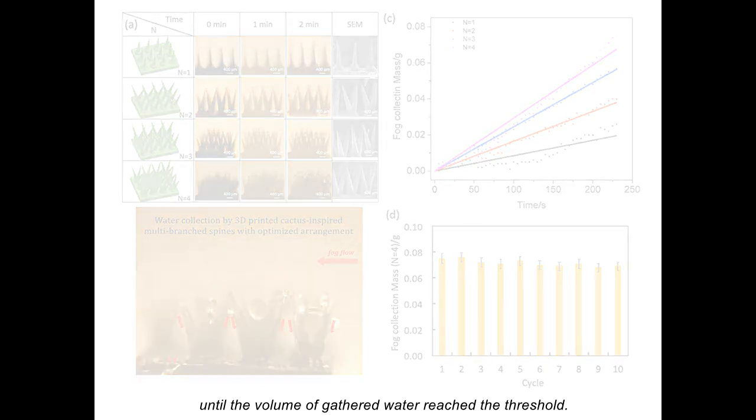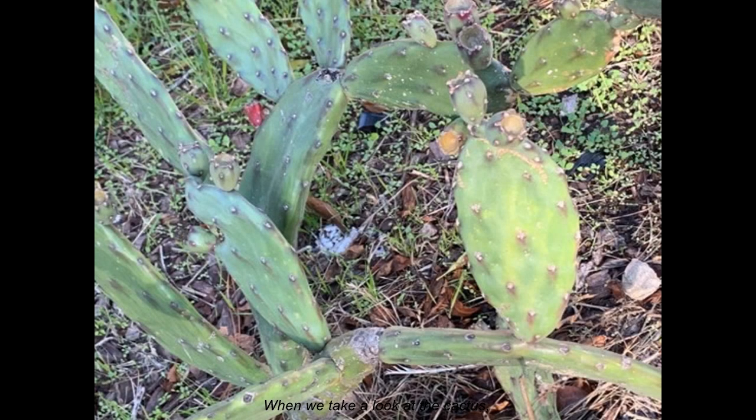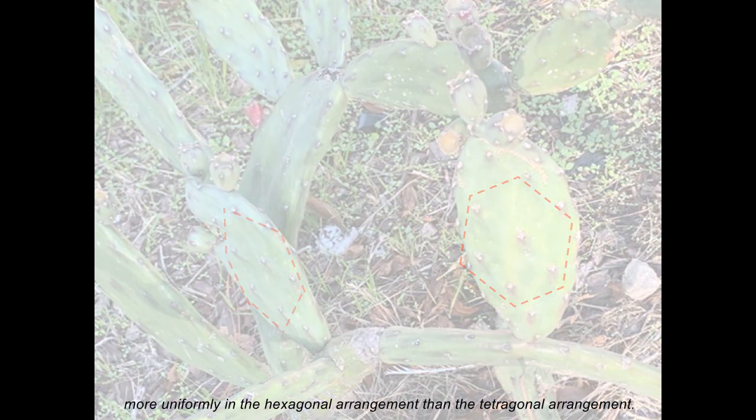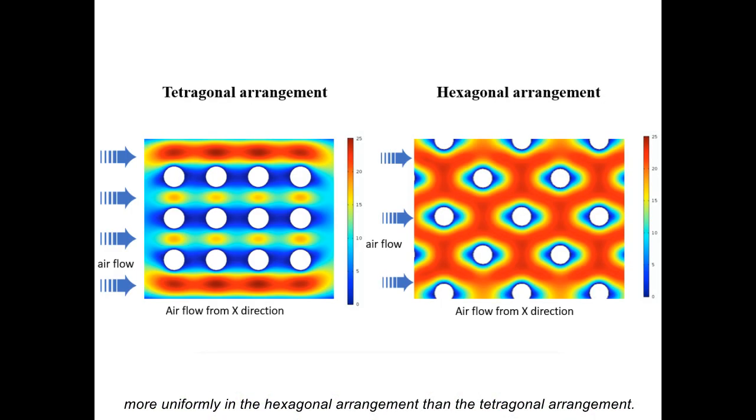When we take a look at the cactus, spines are hexagonally arranged on the surface of the cactus stem. This is because the airflow goes through each spine more uniformly in the hexagonal arrangement than tetragonal arrangement.